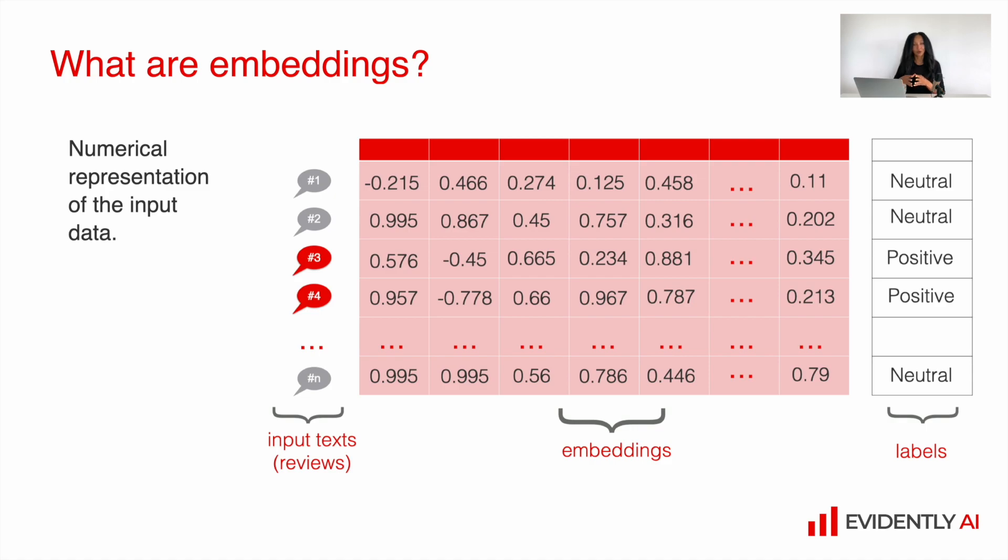Basically instead of raw data, we use numerical vectors in high dimensional space. Those vectors are compact and numerical representations of our raw data, which can be used by many different algorithms including machine learning models to perform classification, regression, ranking, etc. This is why quite often instead of raw text data we use embeddings.